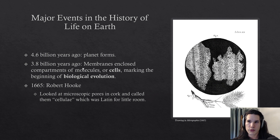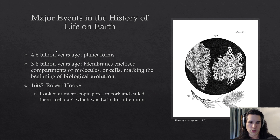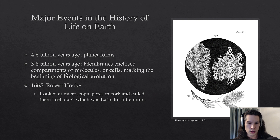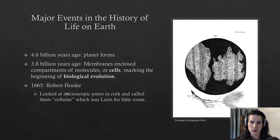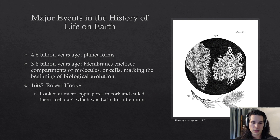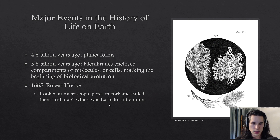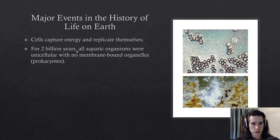Let's have a brief overview of life on Earth. About 4.6 billion years ago the planet formed. Then 3.8 billion years ago we have the first emergence of membranes that enclose compartments of molecules — we'd call these cells — and the development of our first cells marks the beginning of biological evolution. In 1665, Robert Hooke was recorded looking at microscopic pores in a cork and called them 'cellulae,' which is Latin for little room — so he coined the term cells.